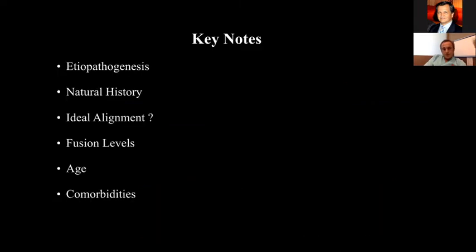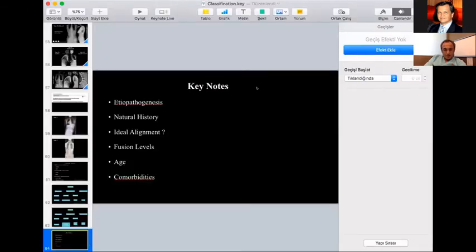In summary, we have to take into account the etiopathogenesis, we have to know the natural history, and we need to understand ideal alignment — but we have to factor in many things. We have to take care of the patient's age and comorbidities as well.